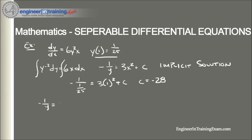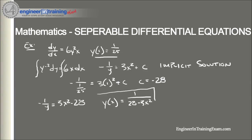Plugging C = −28 back into the equation we get −1/y = 3x² − 28. Now solving for y, we find the explicit solution: y(x) = 1 / (28 − 3x²). That is our explicit solution for this separable differential equation.